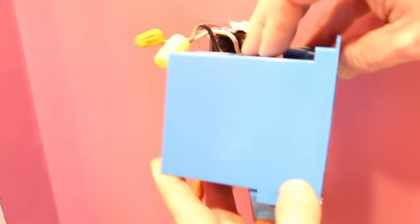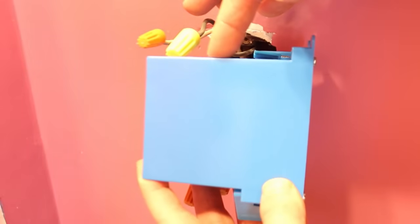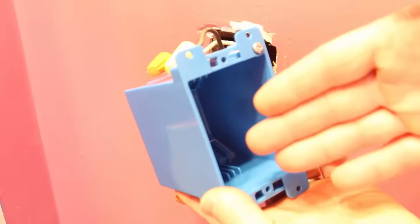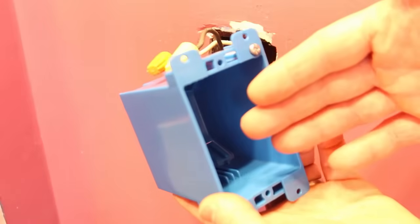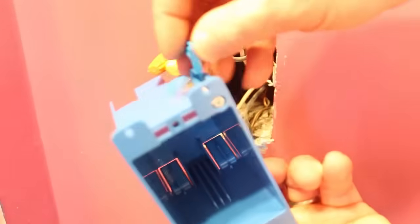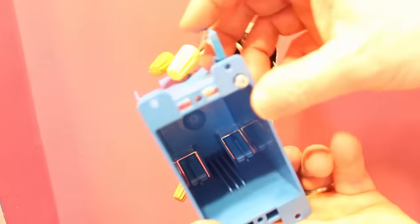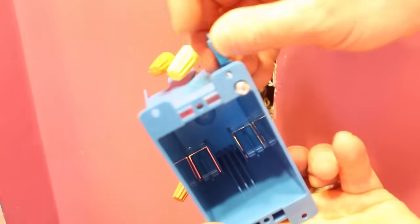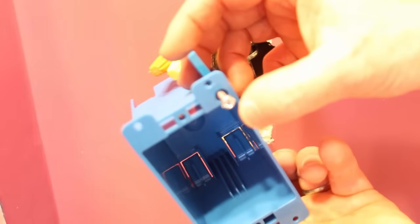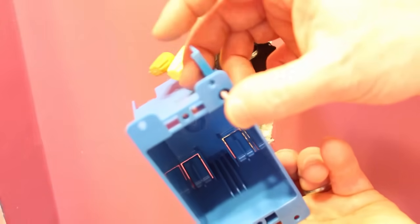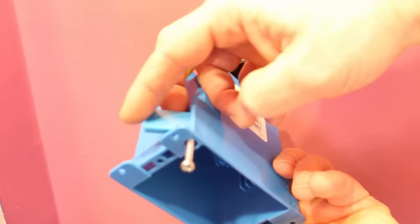The cool part about remodel boxes is that they're easy to install. They come with these little wings on them, and you just tighten down the screw that's attached to the wing and it cinches up to the drywall. Pretty great concept.